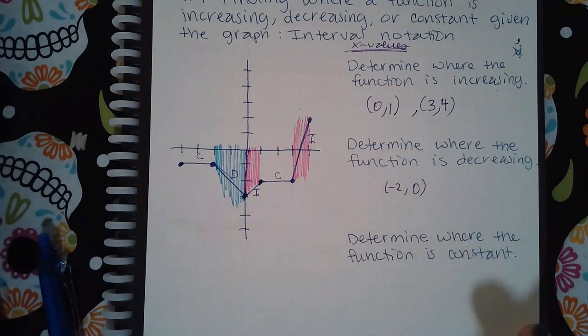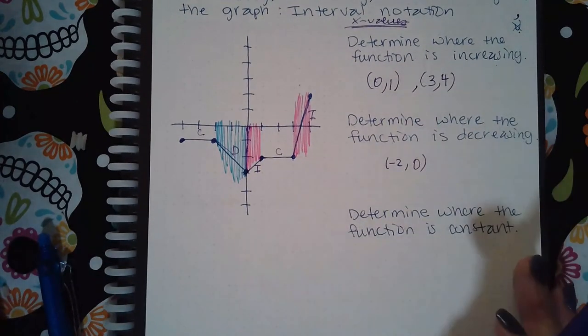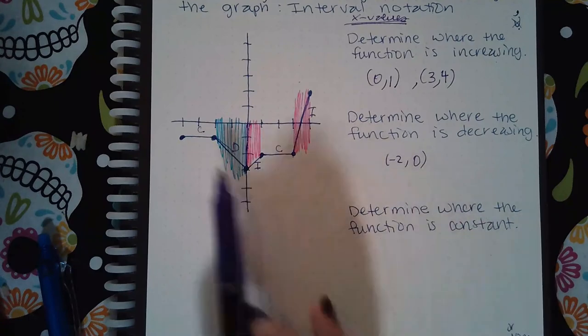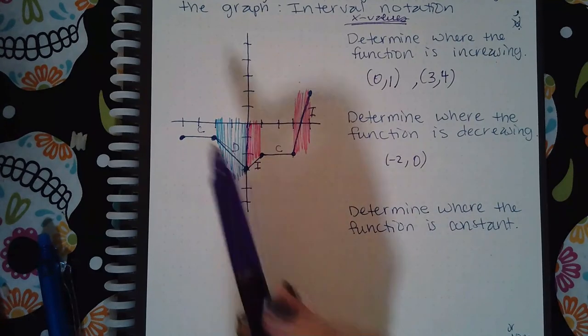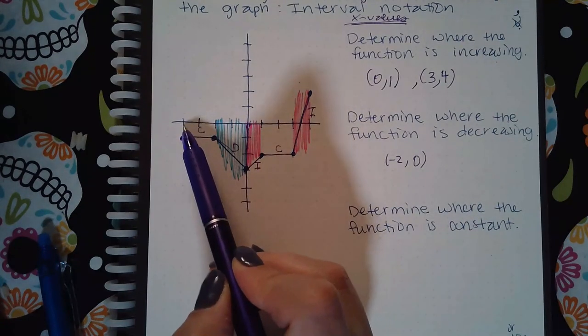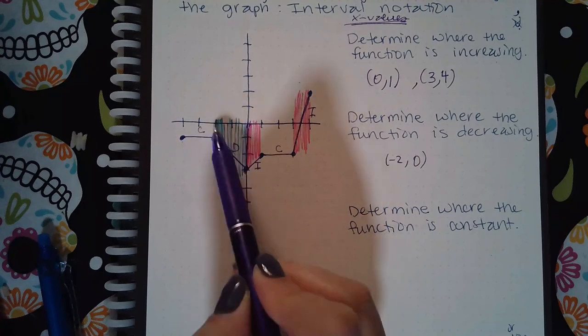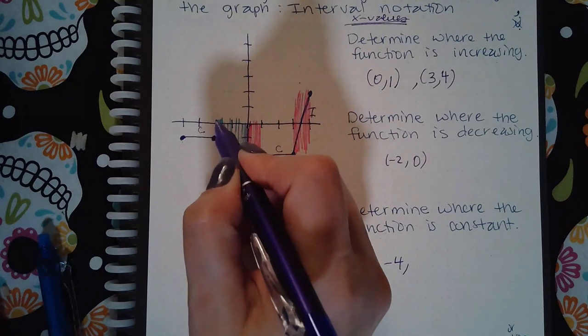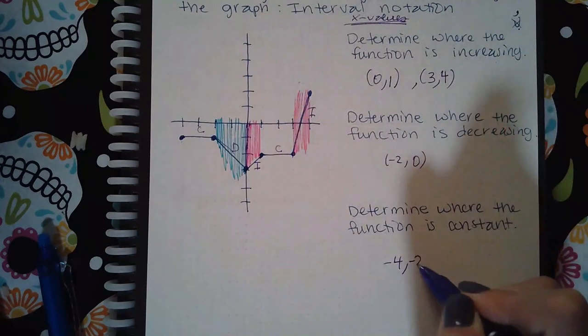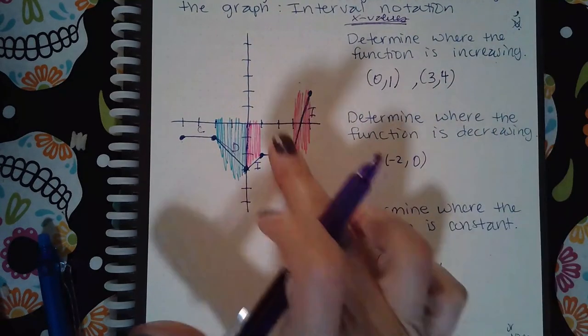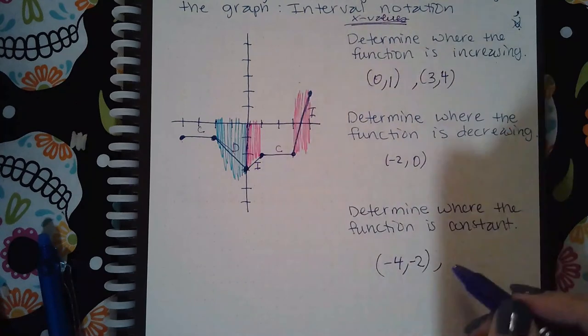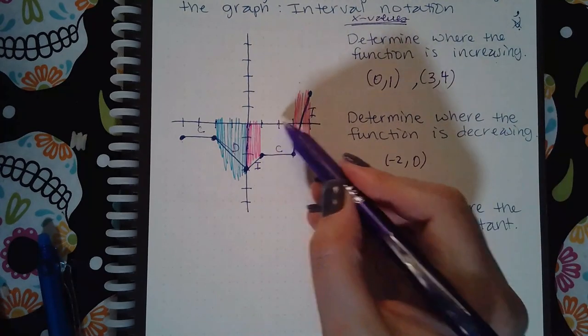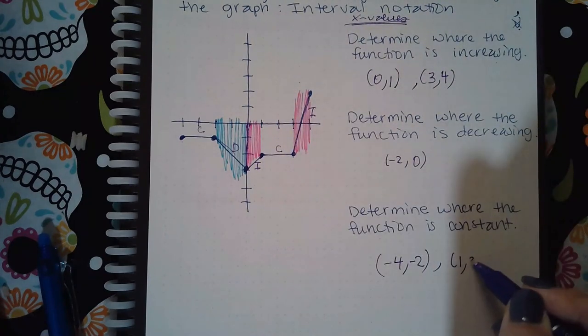To determine where it's constant, I have these two pieces here. This point has the x value of negative four, and then it stops at negative two. Then this section starts at the x value of one and goes on until it gets to the x value of three.